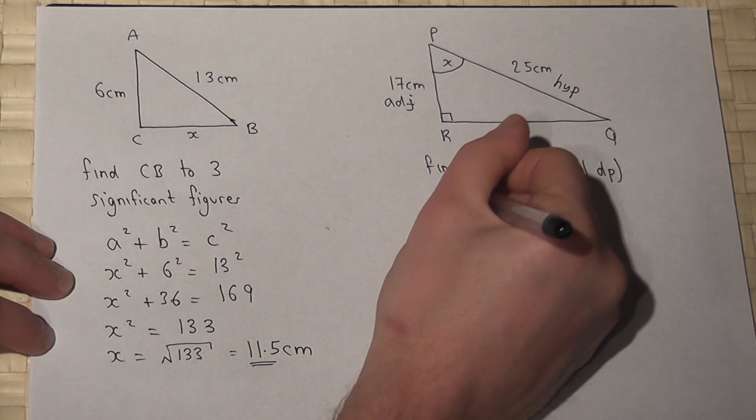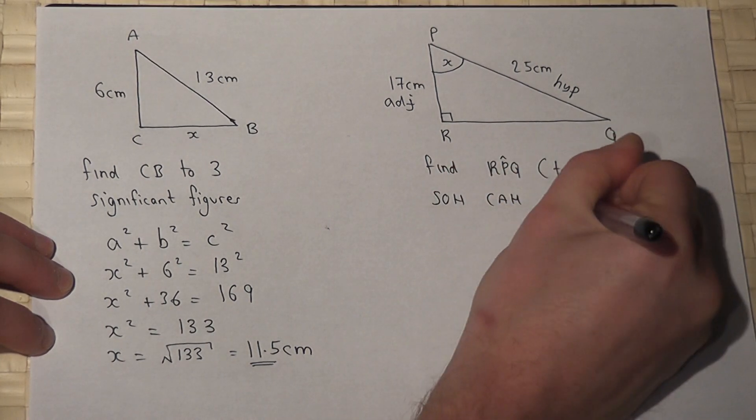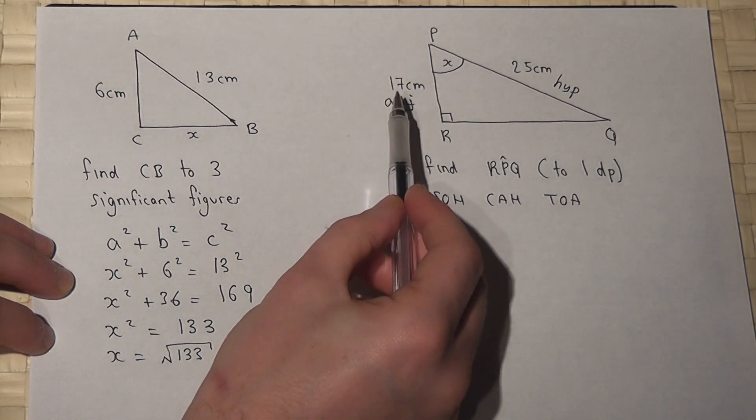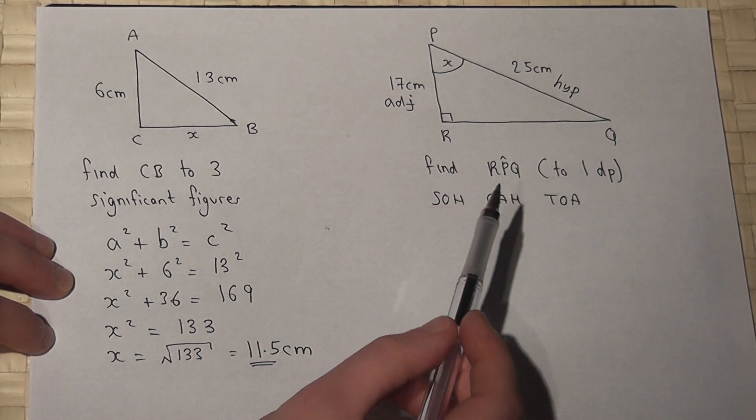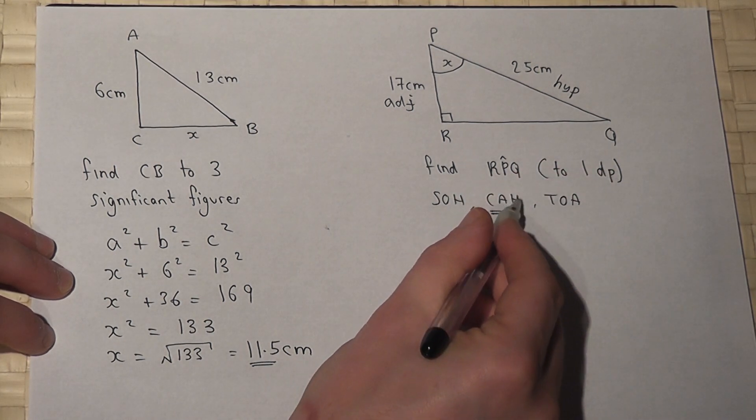Now then, if we consider SOHCAHTOA, this tells us whether to use sine, cos and tan. Now, we have the adjacent and the hypotenuse. So we have to use CAH because it's got the adjacent and the hypotenuse.